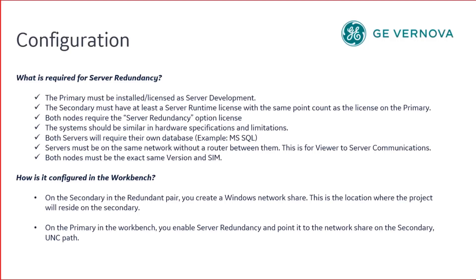What is required for server redundancy? The primary must be installed and licensed as server development. The secondary must have at least a server runtime license with the same point count as the license on the primary. Both nodes require the server redundancy option license. The systems should be similar in hardware specifications and limitations. Both servers will require their own database — for example, a SQL database. Servers must be on the same network without a router between them for viewer-to-server communications, and both nodes must be the exact same version.